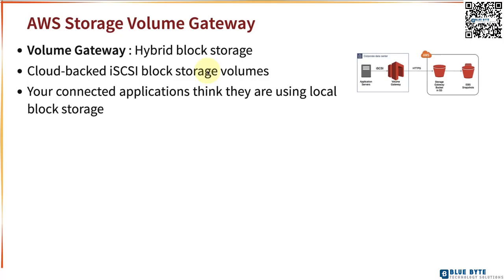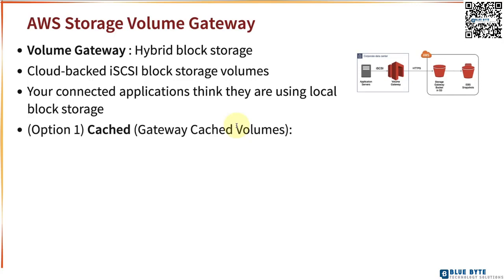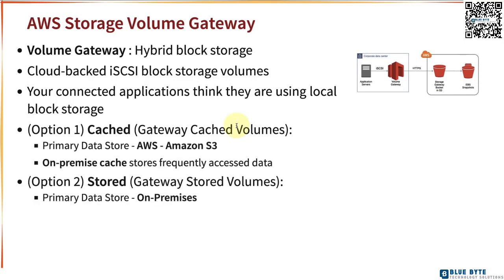Let's say you have applications inside your corporate data center that need block storage. One popular protocol for talking to block storage is iSCSI. Your applications will think they are talking to local block storage, but when using AWS Storage Volume Gateway, the block storage is actually stored in AWS — either in S3 or Elastic Block Store. There are two types of volume gateways: cached and stored.